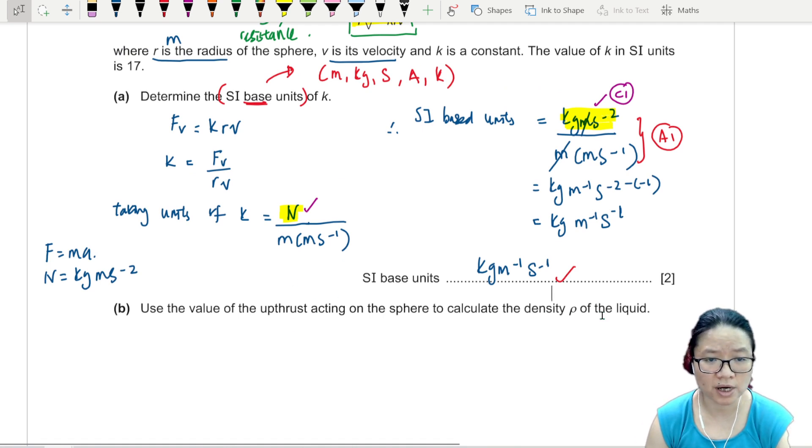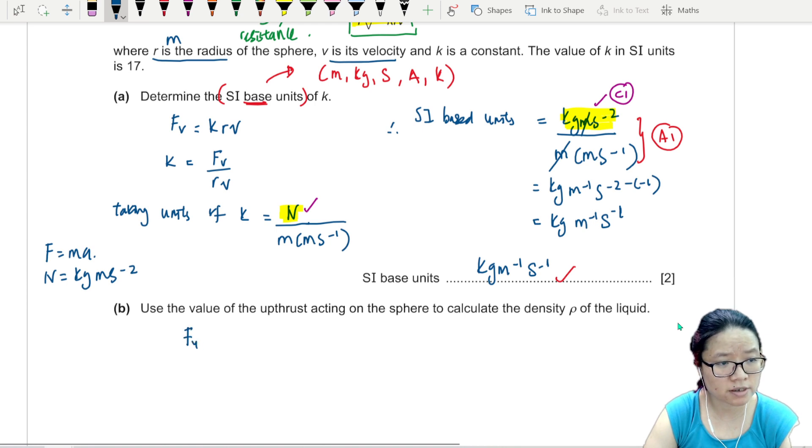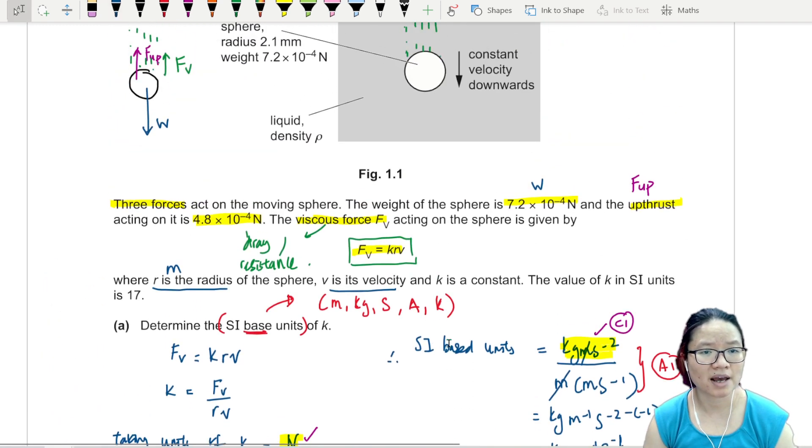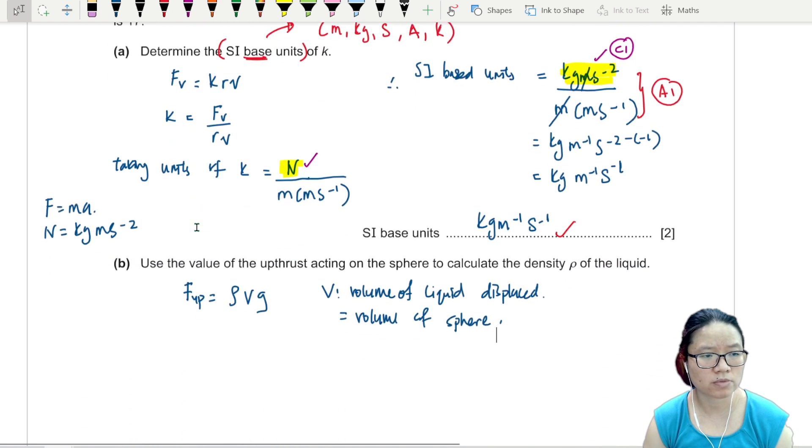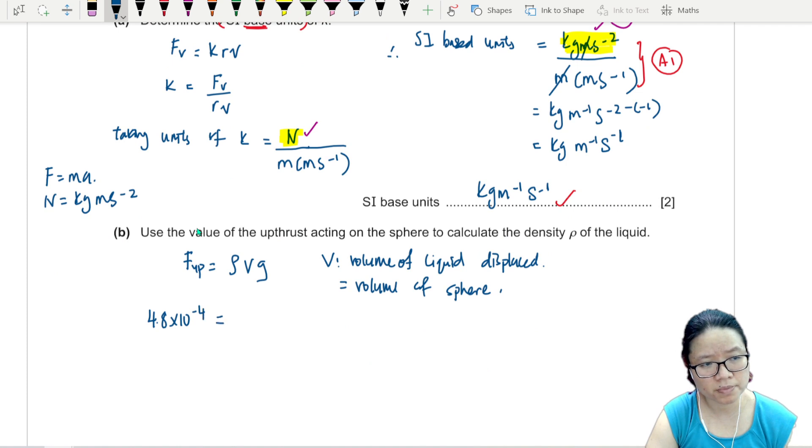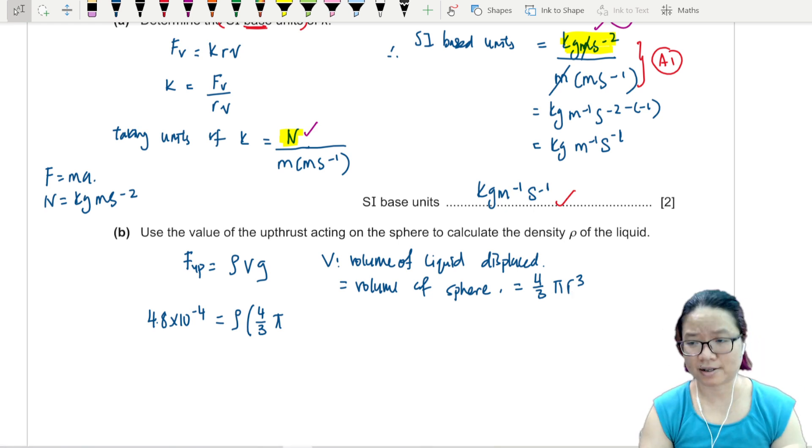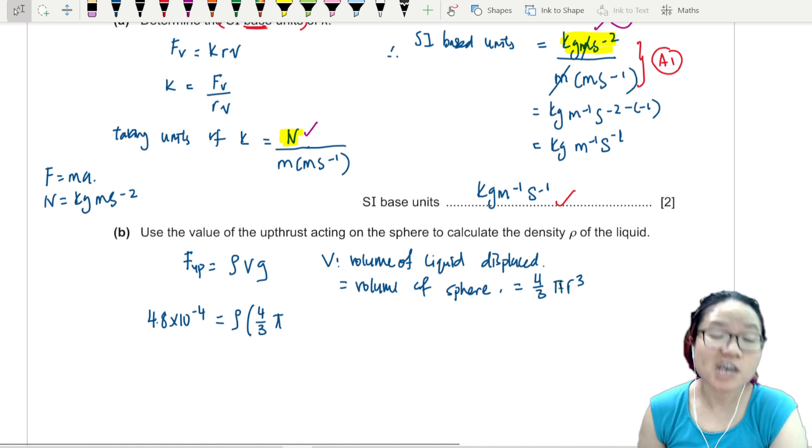Part B: Use the value of the upthrust acting on the sphere to calculate the density of the liquid. Upthrust equals rho Vg. Rho is the density of the liquid, V is the volume of the liquid displaced, which also coincidentally happened to be the volume of the sphere, and G is our good old 9.81.